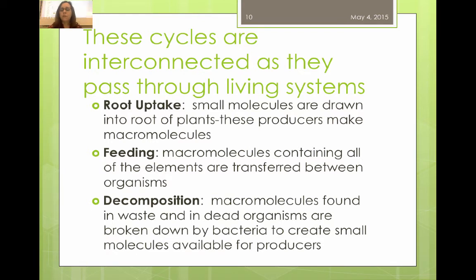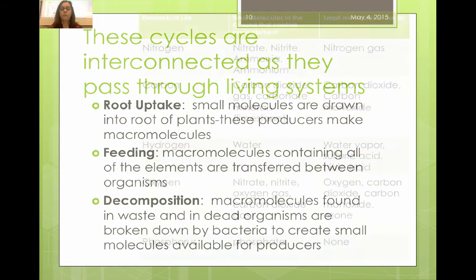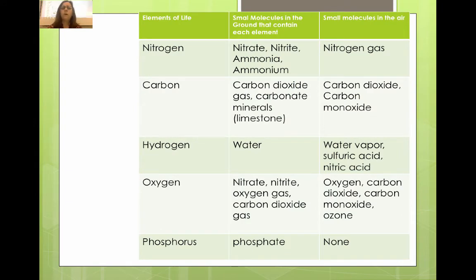The cycles are interconnected as they pass through living systems. Root uptake draws small molecules along with water, as different ions like nitrates and phosphates are attracted to the water molecules and pulled up into plants. Feeding involves all the macromolecules — proteins, lipids, nucleic acids, and complex carbohydrates — transferred containing all the different atoms participating in these cycles. Decomposition takes these large macromolecules and breaks them down into the smaller molecules available for recycling. The small molecules I'm talking about contain nitrogen, carbon, hydrogen, oxygen, and phosphorus.